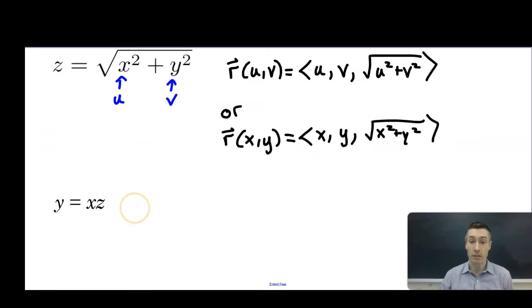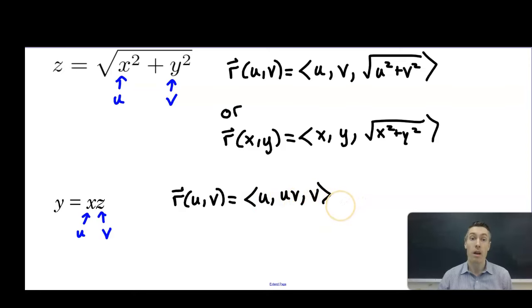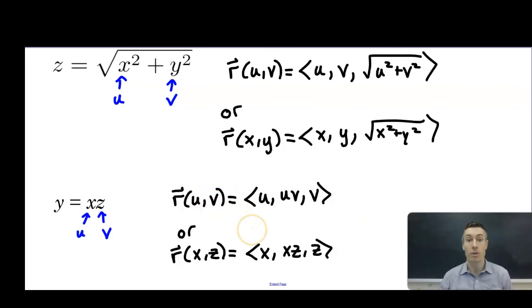Now for y equals x times z. We could let x be u and z be v, giving r of u, v as u, u times v, v. Or we could parameterize in terms of x and z directly: x stays x, y equals x times z, and z stays z. Either way, we've reduced the equation to a parameterization in terms of two variables and accomplished our goal.